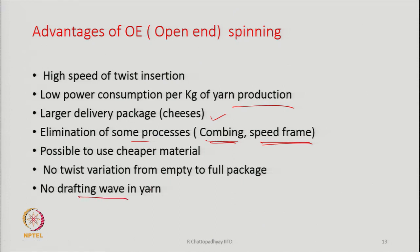No drafting wave in the yarn, because roller drafting will not be there. We will see that as the sliver is drafted, we have eliminated the roller drafting unit, and hence the drafting wave generation is not there — which is otherwise possible in the case of ring-spun yarn. Drafting wave can be generated on a draw frame, it can be generated on a roving frame, also possible during ring spinning itself in the drafting system. So at different places the drafting wave can generate; here this possibility is almost nil, though we will be feeding a drawn sliver. When the sliver is dropped on the draw frame there is a chance of development of drafting wave there, but beyond that in the spinning process there is no scope for generation of drafting wave.